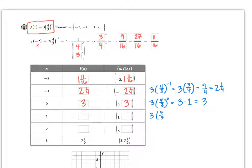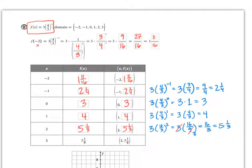For x=1, it's 3 times (4/3) to the 1, which means just 3 times 4/3, and that equals 4. Now we have 3 times (4/3) to the second power, which is 3 times 16/9. This reduces: I get 3 on the bottom, so it's 16/3, which is 5 and a third.